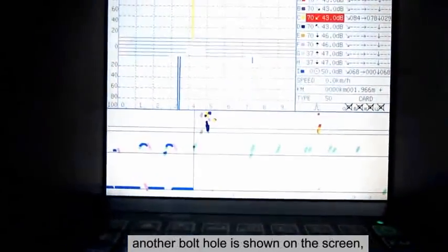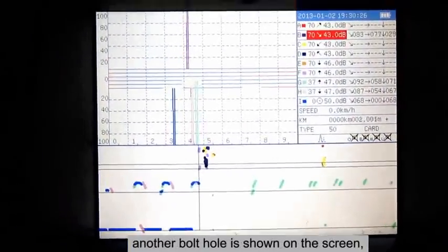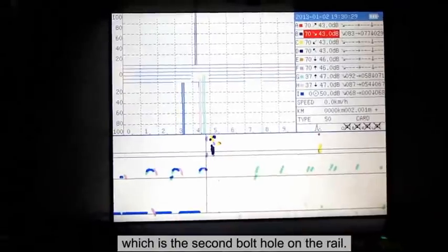Move the system forward on the rail. Another bolt hole is shown on the screen, which is the second bolt hole on the rail.